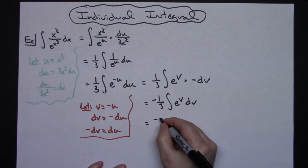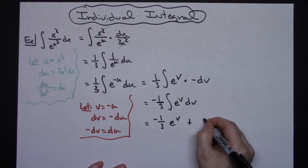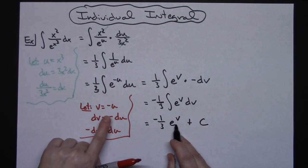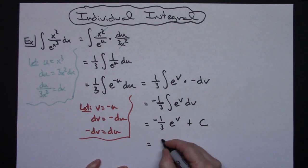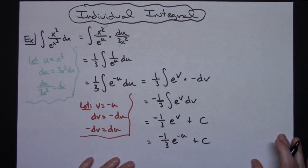So negative 1 third e to the v plus c. I can substitute my v back in as a negative u. So negative 1 third e to the negative u plus c.